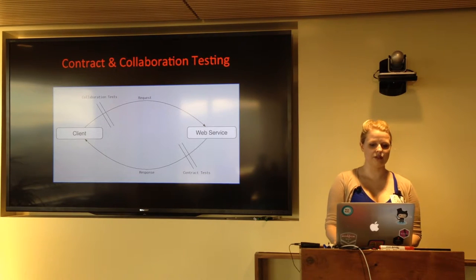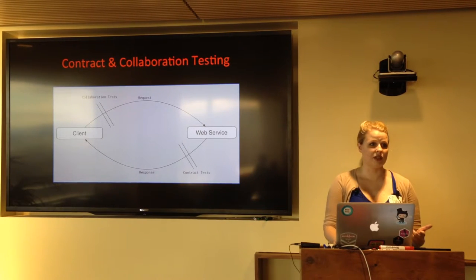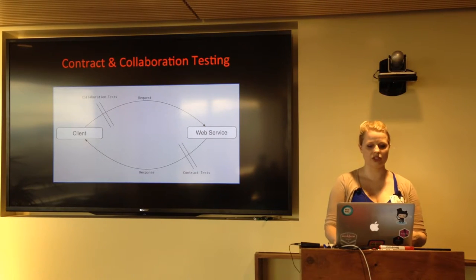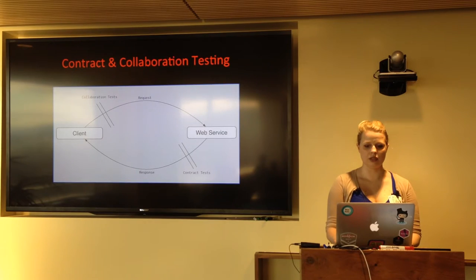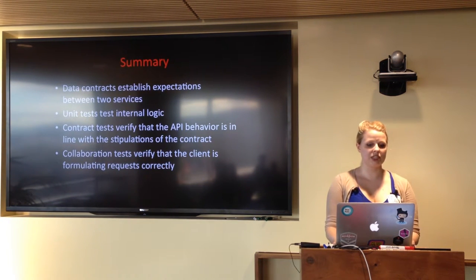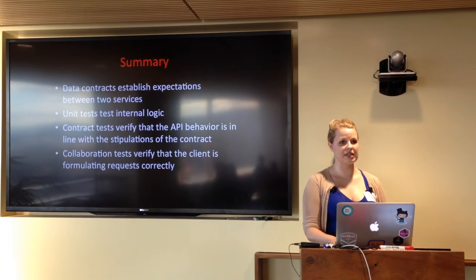Here's a little illustration of how contract testing and collaboration testing work together. You can see a simple diagram where the client makes a request to the web service. The outgoing request is examined in collaboration tests — is it including the right headers, the right data, is the authentication scheme correct? Then the contract tests look at the response from the provider service, asking substantially similar questions about the responses it returns. So: data contracts establish expectations, unit tests test internal logic, contract tests verify API behavior matches the contract, and collaboration tests verify the client is making correct requests.